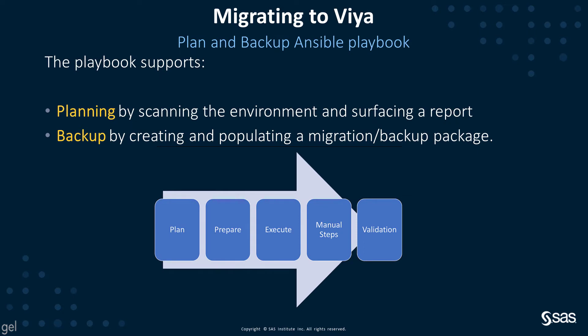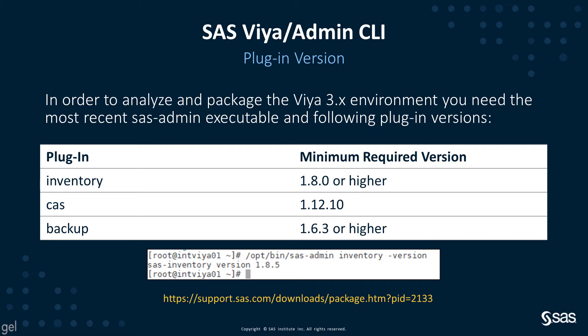Planning and assessment is one of the most important steps in the process of migration. The plan and backup playbook supports planning by scanning the environment, publishing results to CAS and surfacing a report about the results, and also supports backup by creating and populating a migration package. To use the playbook, you need the most recent SAS admin executable. The inventory CLI plugin must be at version 1.8 or higher, the CAS plugin for the CLI must be 1.12.10 or higher, and the backup plugin must be 1.63 or higher.